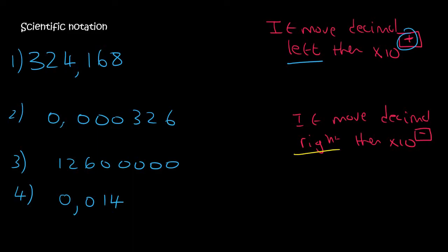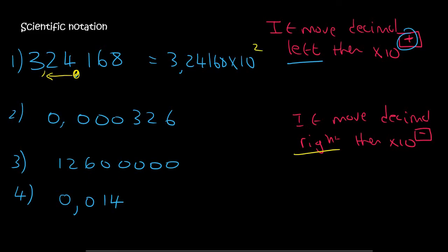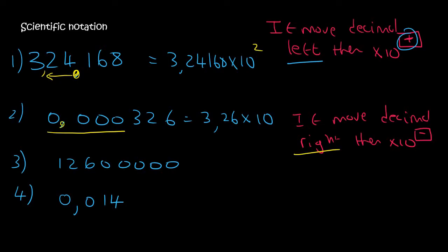Let's try these four questions. For the first one, there are no leading/trailing zeros, so we say 3, 2, 4, 1, 6, 8 times 10. The decimal was over here, and now it's over here — we've moved it 2 places to the left, so the answer is positive 2: times 10 to the 2. For the next one, there's a whole lot of zeros in the front, so we ignore that and say 3, 2, 6 times 10. The decimal was moved 1, 2, 3, 4 places — but it was moved 4 places to the right, so it must be negative: times 10 to the minus 4.